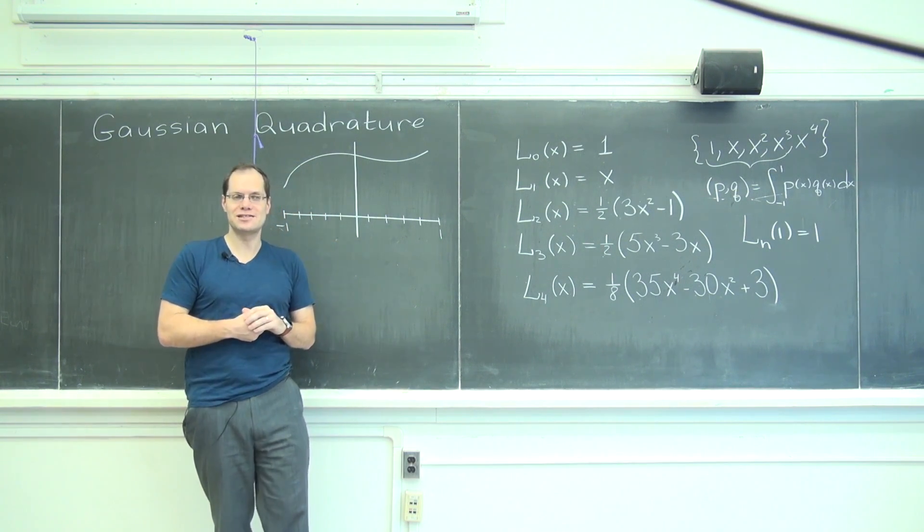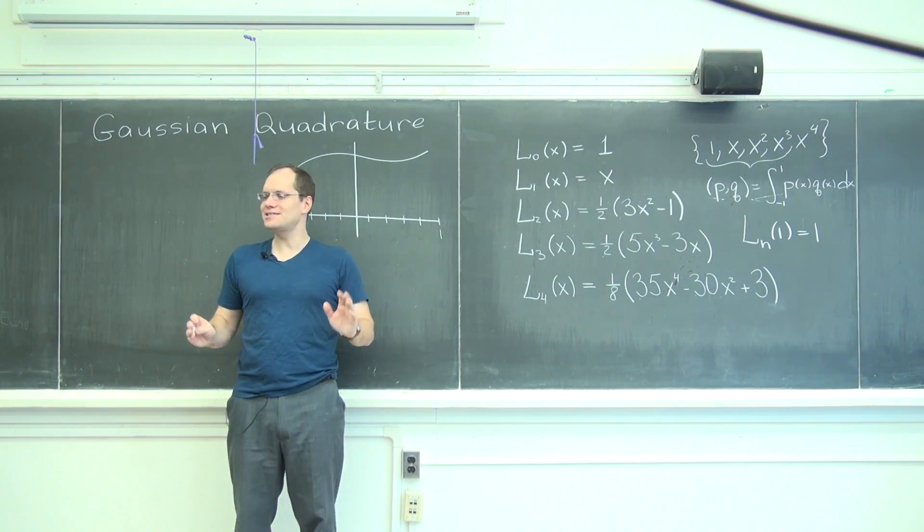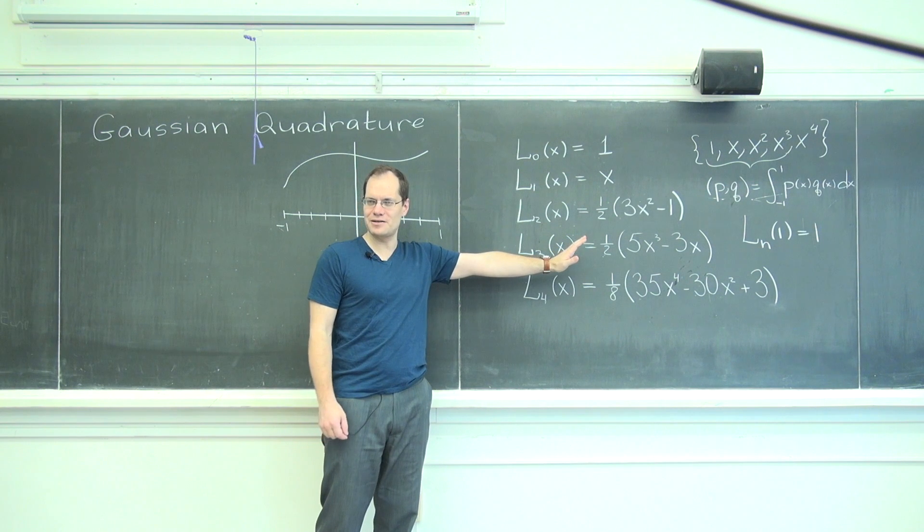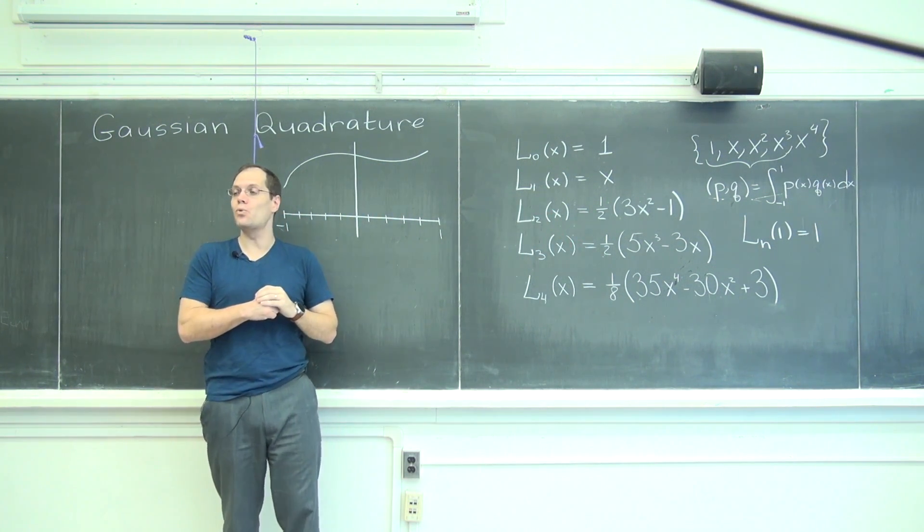So here is the first idea. The first idea has nothing to do with Legendre polynomials. It only has to do with choosing smart weights.